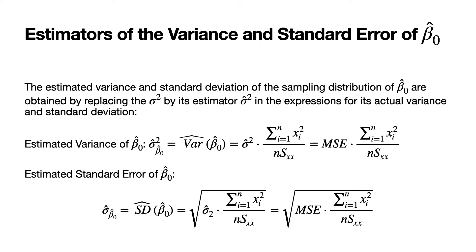The estimated standard error of beta 0 hat is denoted sigma hat sub beta 0 hat, or SD hat of beta 0 hat. It equals the square root of the estimated variance — the square root of sigma hat squared times the sum of the squared x values divided by n times S sub xx — which is equal to the square root of the MSE times the sum of the squared x values divided by n times S sub xx.